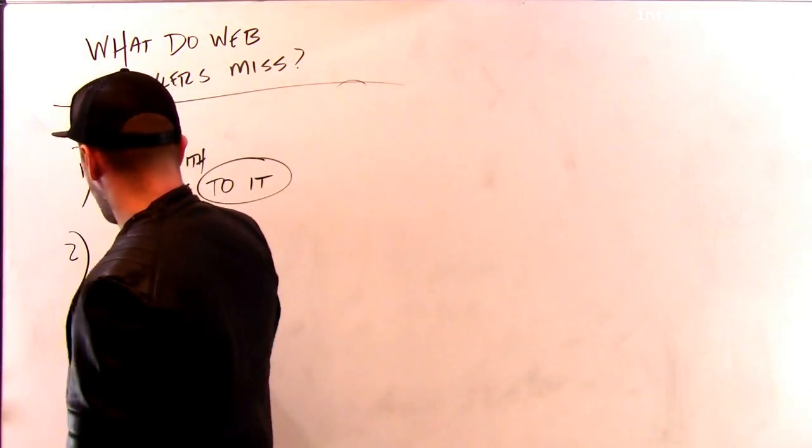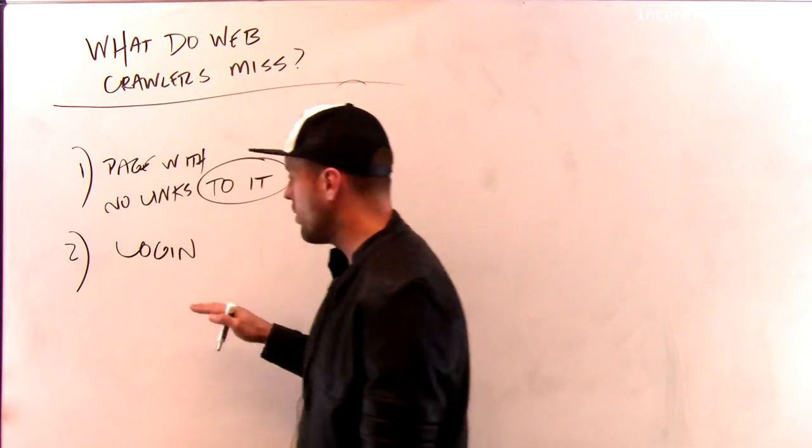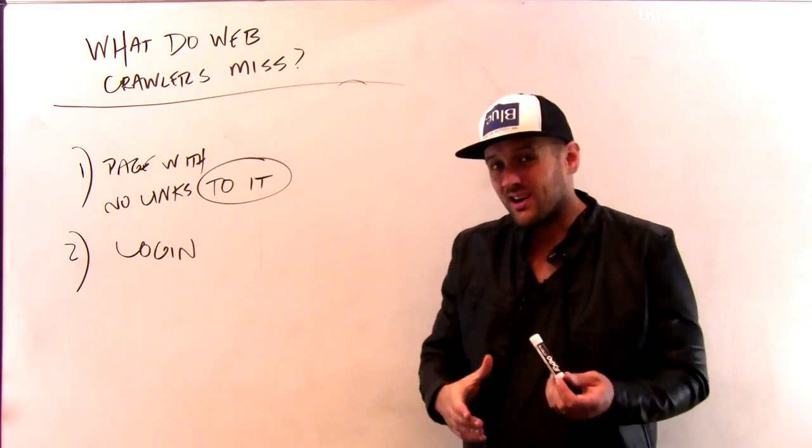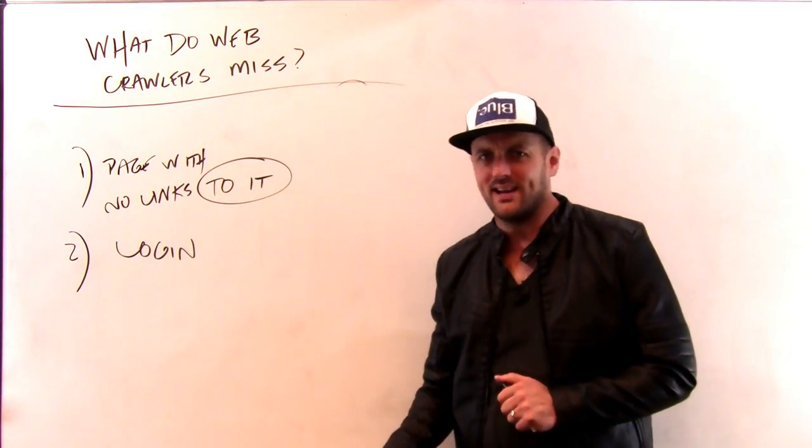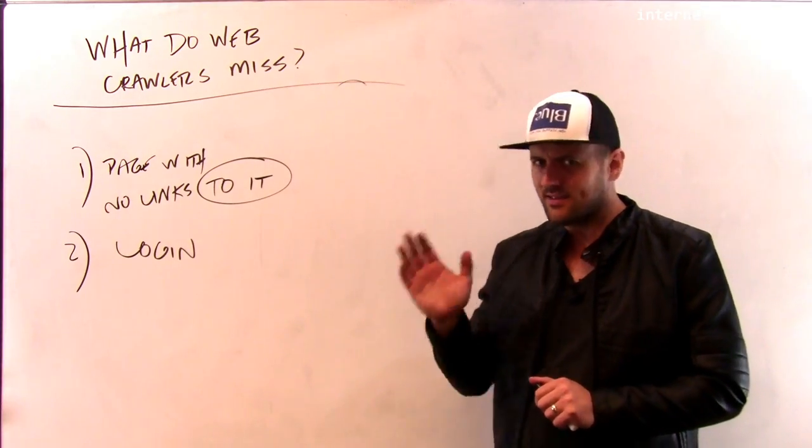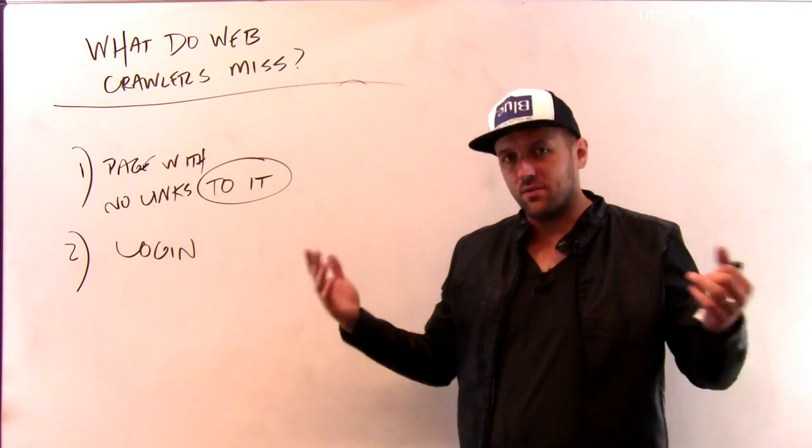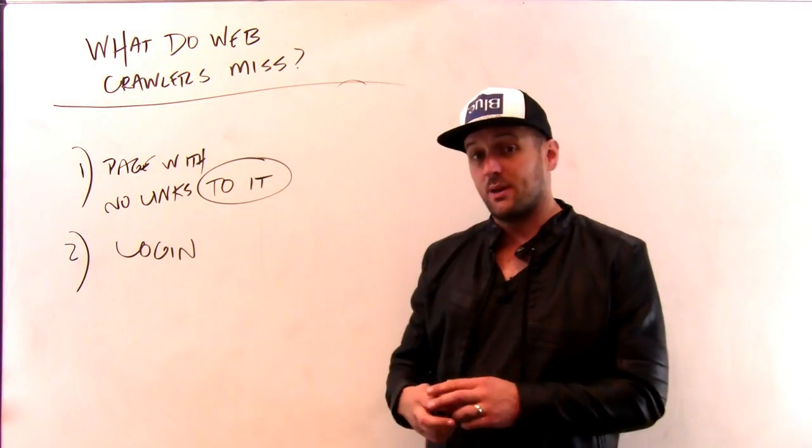The other thing crawlers will miss is stuff that requires login. So if a whole part of my site is password protected, the crawler doesn't have a login. The crawler is just a robot. The robot doesn't know how to login to the site. It doesn't have credentials to login to the site. I suspect this is true in most cases. But if I have a site and let's say only five people in the world have login access to it and those pages are protected that way, or for example,